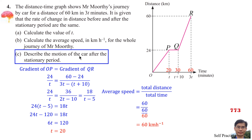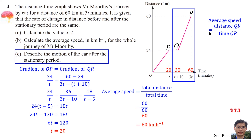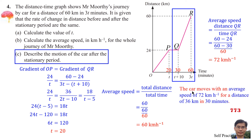Part C: Describe the motion of the car after the stationary period. After the stationary period, that is segment QR, we calculate the average speed. Distance QR equals 60 minus 24, which is 36 km. Time QR equals 60 minus 30, which is 30 minutes, converted to hours by dividing by 60. Average speed equals 72 km per hour. The car moves at a constant speed of 72 km per hour for a distance of 36 km in 30 minutes.